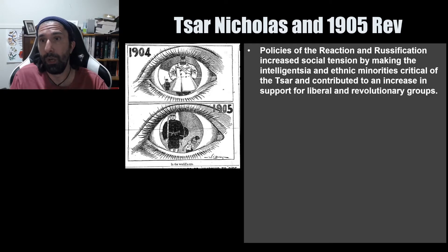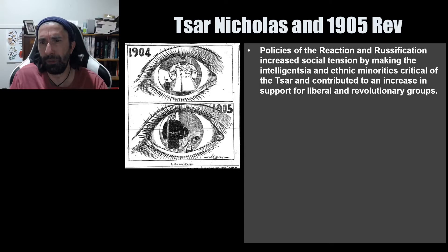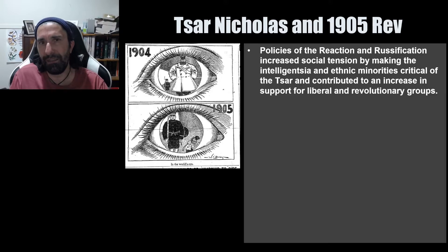These policies of the Reaction and Russification increased social tension by making the intelligentsia and ethnic minorities more critical of the Tsar and less supportive of his regime. They also contributed to increased support for liberal and revolutionary groups. For example, a number of Bolshevik leaders came from ethnic minorities: Trotsky, who joined the Bolsheviks in July 1917, was from a Jewish background, and Stalin was Georgian and joined the Bolsheviks partly because of how the Georgians had been treated.